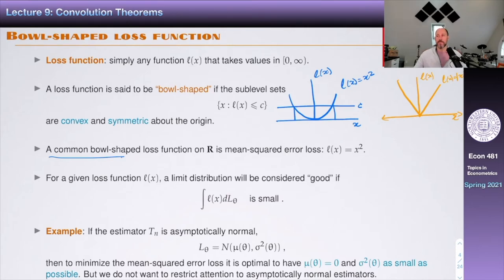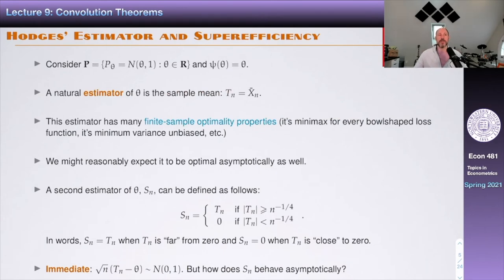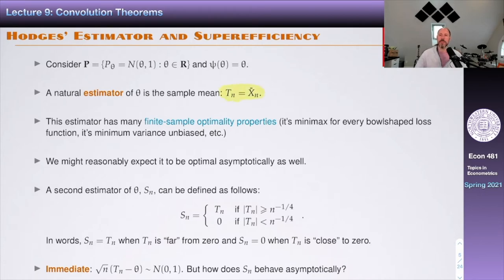We'll illustrate with Hodges estimator, also known as super efficiency. Consider the normal location model with variance one: P is the family of distributions parameterized by θ ∈ ℝ, and we're estimating ψ(θ) = θ. The natural answer is the sample mean, which has many finite-sample optimality properties: it's minimax for every bowl-shaped loss function and minimum variance unbiased — these properties hold for every single n.